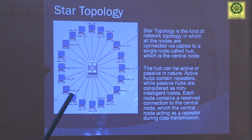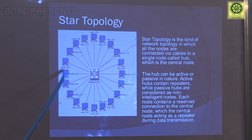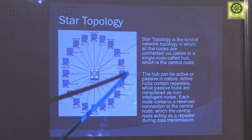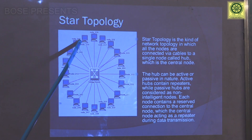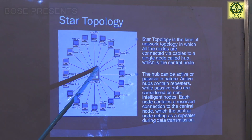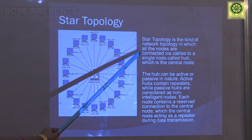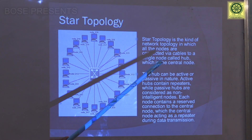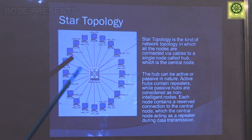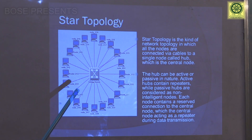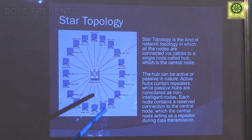Coming to star topology — this is the physical arrangement of a star network. Taking the example of our college network, the middle hub is connected to all nodes such as departments and administration buildings. Star topology is a kind of network topology in which all nodes are connected via cable to a single node. The hub must be activated for the connection to work, and the hub is the main part of star topology, also known as the passive or passive intelligent node.